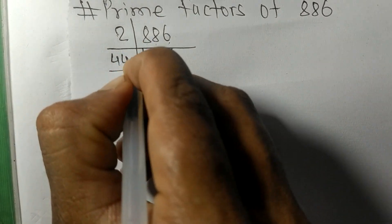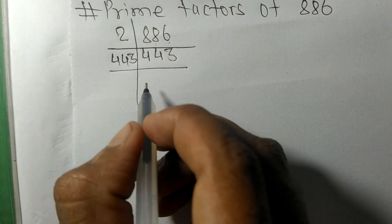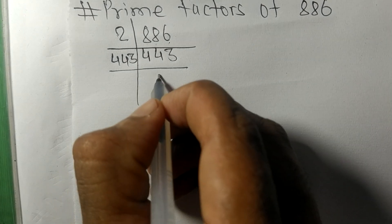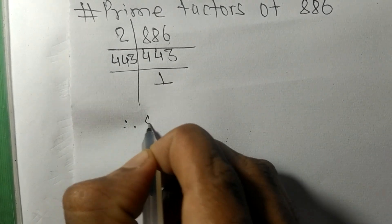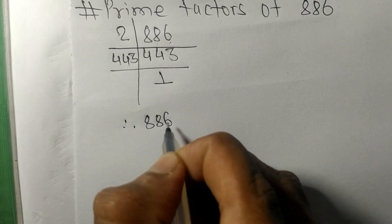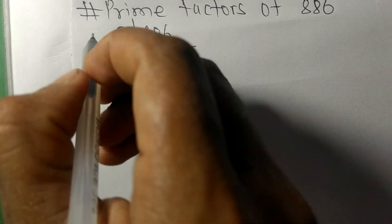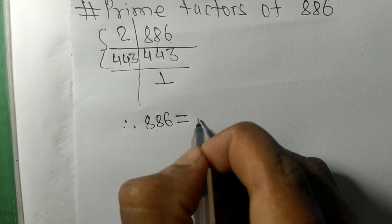by 443 only. On dividing we get 1. Therefore 886 equals, from this side it is 2